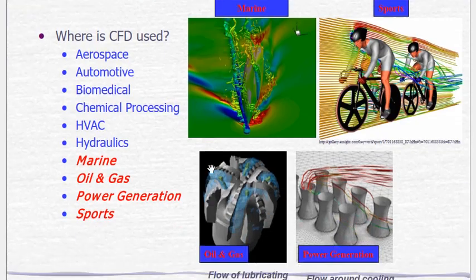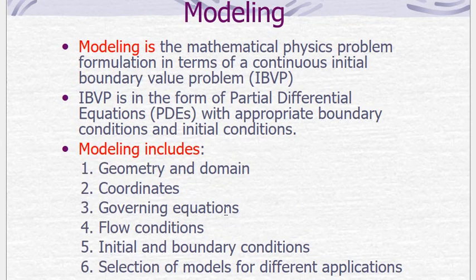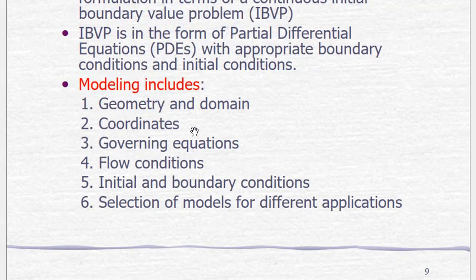Now let's look at modeling — what is modeling and how we implement it in CFD. Modeling is the mathematical physics problem formulation in terms of continuous initial boundary value problems. These initial boundary value problems are linked with partial differential equations, which are equations with more than one independent variable. Modeling includes first selecting the geometry and domain, then selecting the coordinate system — whether 1D, 2D, or 3D. We then move to the governing equations, such as D'Alembert's principle, Newton's second law of motion, and the law of conservation of energy.